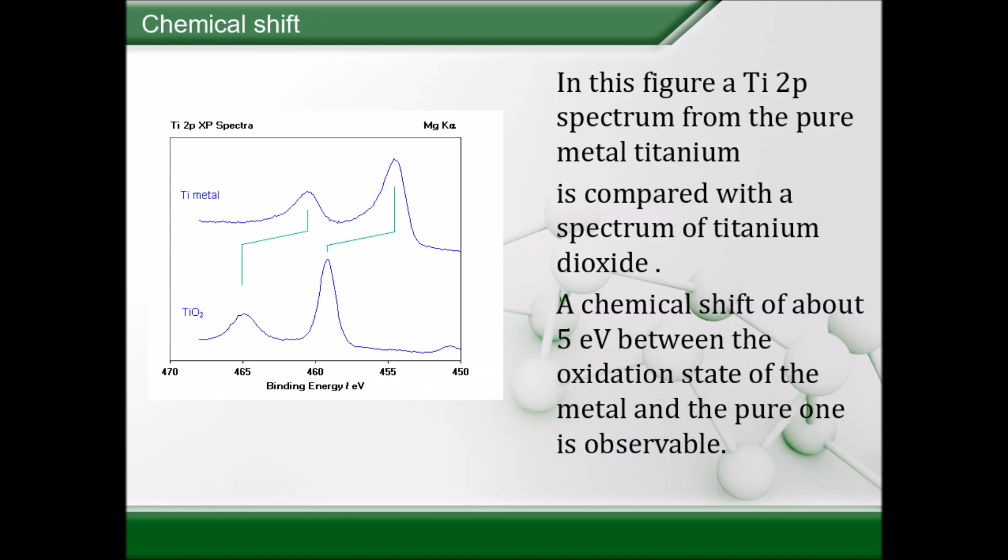After the electronic structure in the previous slide, let's have a look at the chemical shift. In compounds where ionic or covalent bonding occurs, the peak position might shift. If we analyze a molecule, we will get binding energies as well. And as you can see in this titanium and titanium dioxide comparison, the binding energies will shift as new bonds form. In this example, we have an oxidation which shifts the binding energy by around 5 eV to the left.